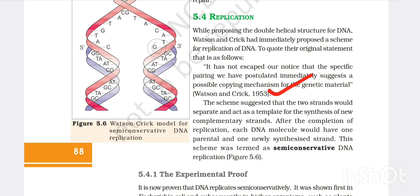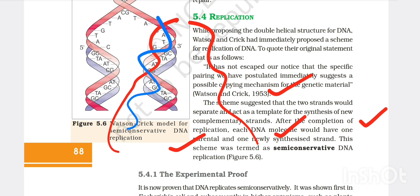This statement was given by Watson and Crick in 1953. The scheme suggested that two strands would separate and act as a template for synthesis of new complementary strand. After the completion of replication each DNA molecule would have one parental and one newly synthesized DNA strand. This scheme was termed as semi-conservative DNA replication.